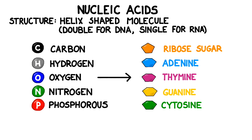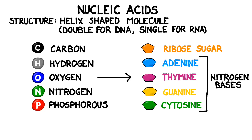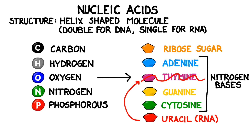These building blocks are ribose sugar, and then four other components called adenine, thymine, guanine, and cytosine. We also sometimes call these last four components nitrogen bases. In RNA, there is an additional nitrogen base called uracil, which takes the place of thymine.